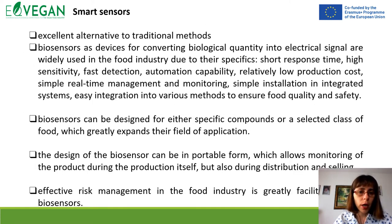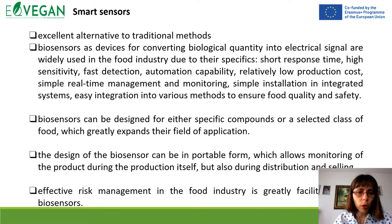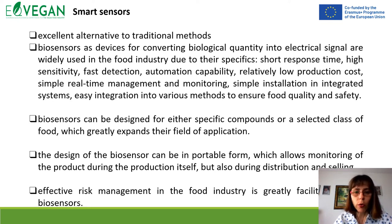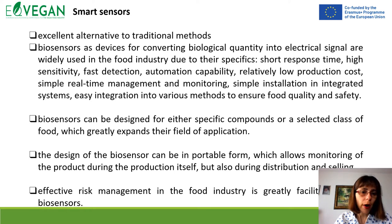Smart sensors are an excellent alternative to traditional methods. There are different varieties of sensors that can be used in vegan food processing to collect data and control the process. For example, biosensors are devices for converting biological quantities into electrical signals, and they are widely used in the food industry due to their specific properties.